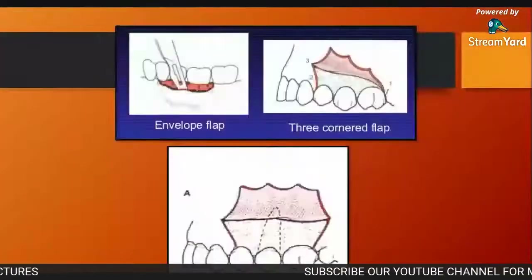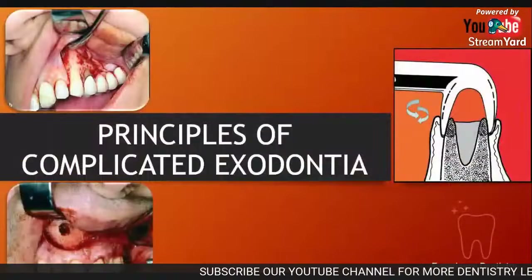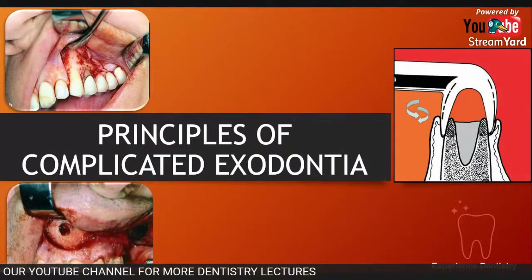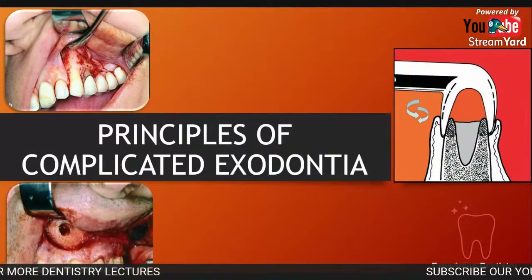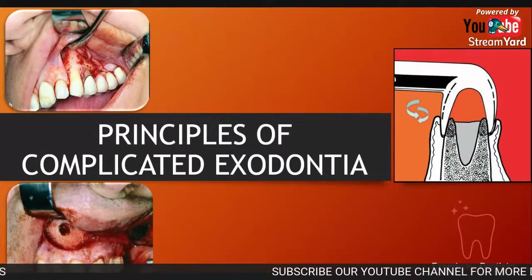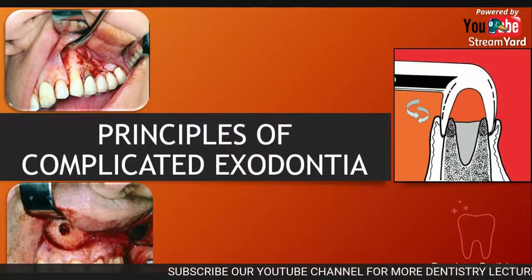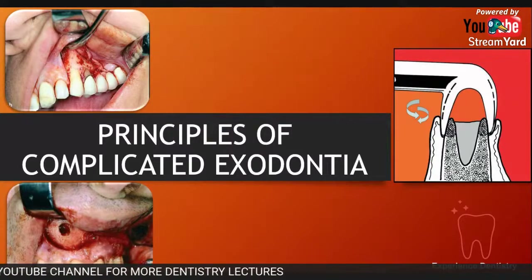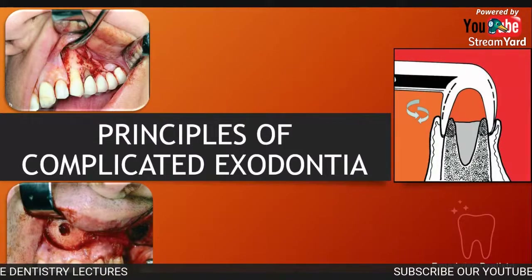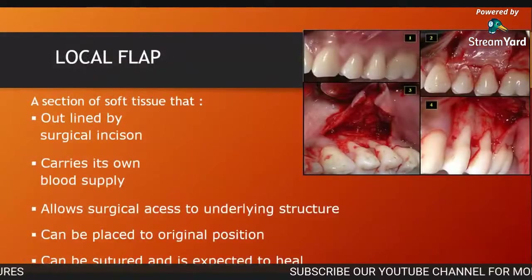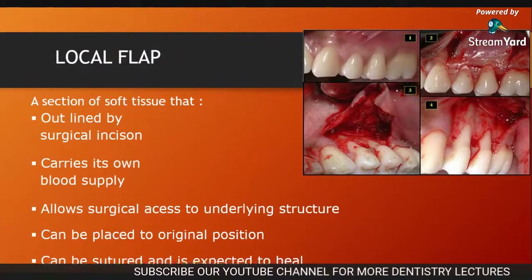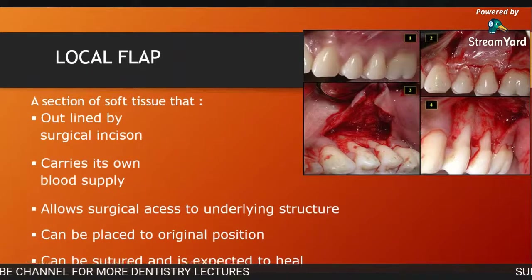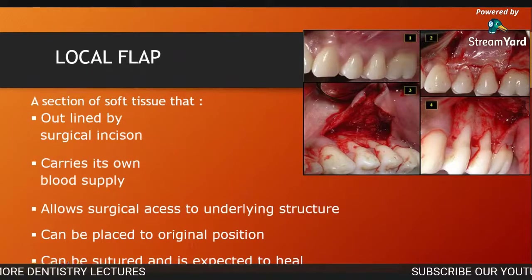There are some principles that you need to follow whenever there is a case in the surgery department that you interface which will be complicated — one which can't be done with simple surgical techniques. You need to do some complicated surgical procedure, and for that you need to follow the following principles. First, whenever we encounter such a case, we have to perform surgical incisions — basically we have to raise different types of flaps.